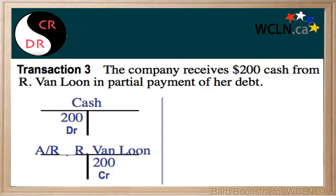Accounts receivable decreased by $200. Asset accounts decrease on the credit side, so therefore you will have a credit entry of $200.